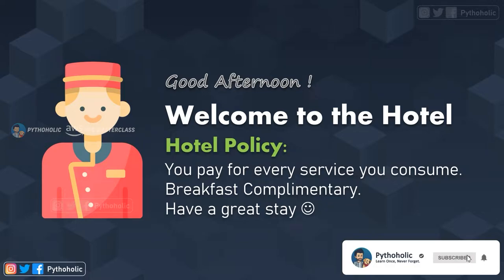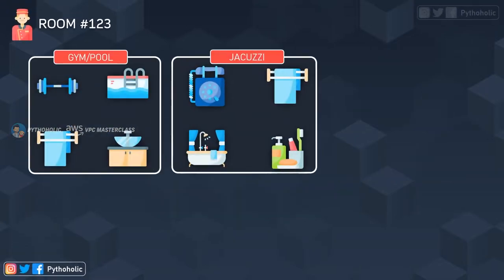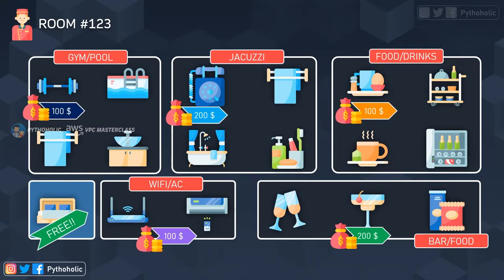Then he asked you, would you be interested in taking a look at the services that the hotel has to offer? You said, well, of course, yes, that would be great. Then the manager showed you the list of features available at the hotel. So you have the gym and the pool area, the jacuzzi service, a variety of food service, bar and other drinks, and the most important one — the Wi-Fi and the air conditioning. The bed, of course, is free. All the services that you see here have a price attached to it, and that makes up the total price of the service package.